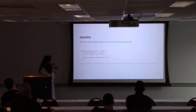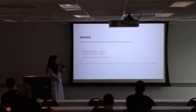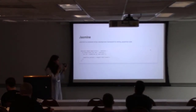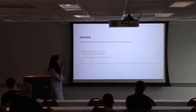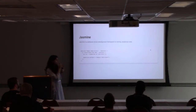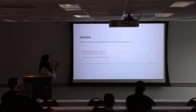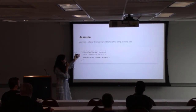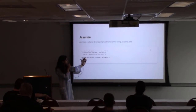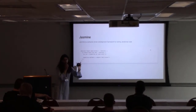Jasmine is a behavior-driven development framework for testing JavaScript code. The test suite is defined in the `describe` function, which accepts two parameters: a string describing the test suite, and a function implementing it. The second global function is `it`, which also accepts two parameters — a string describing the test in plain text, and a function with the actual code. Here we create an element object, capture its text, and expect that text to equal 'hello world'.